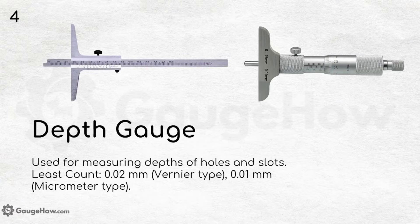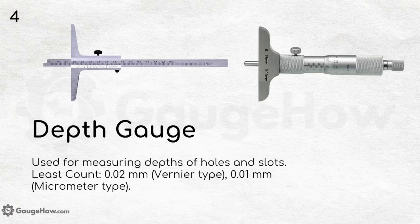Depth gauge. Used for measuring depths of holes and slots. If you are using a vernier caliper type depth gauge, the least count will be 0.02 mm, and if you are using a micrometer type depth gauge, the least count is 0.01 mm.